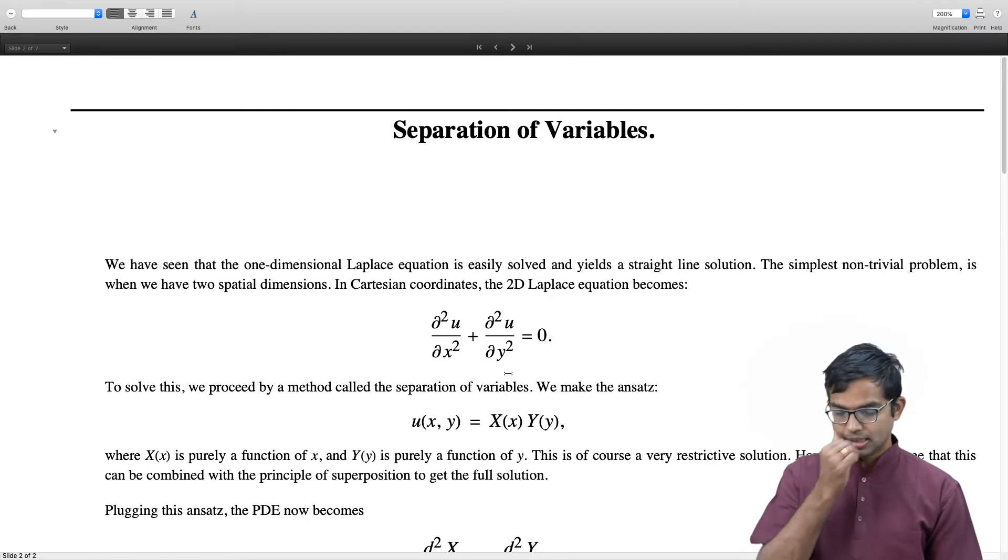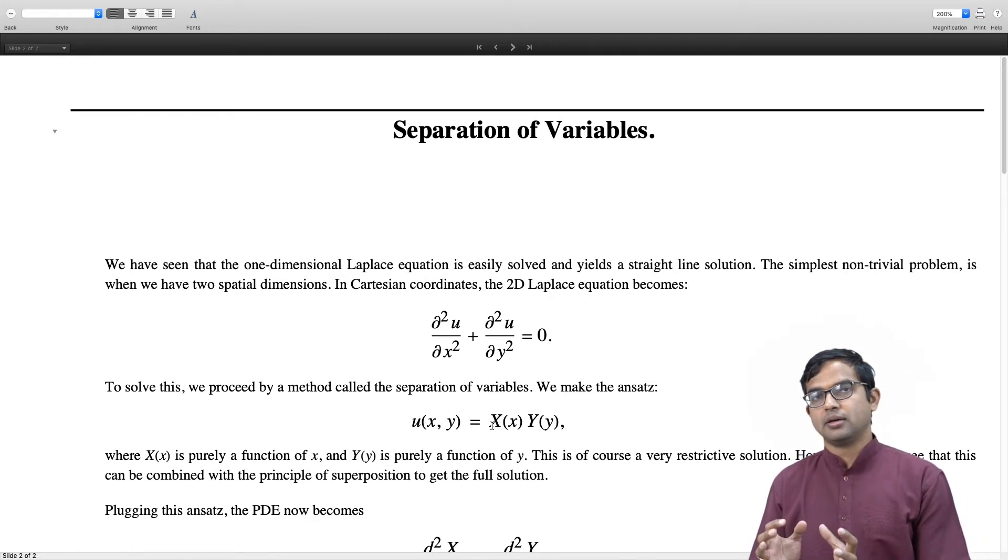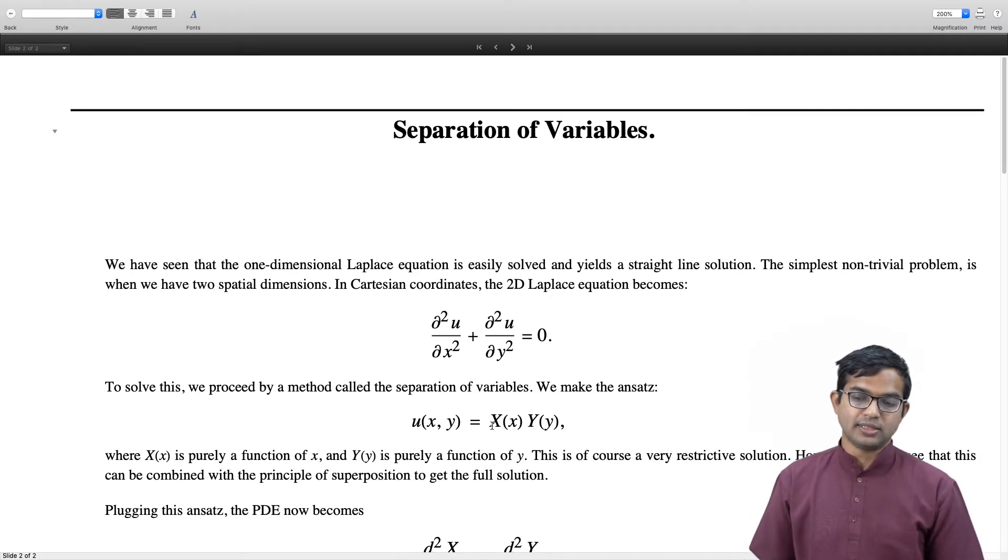The ansatz is to look for a solution where you can write the part which depends on x separately and the part which depends on y separately and take the product: u(x,y) = X(x)Y(y). When doing this, it might appear that we are imposing a very artificial restriction and may only find a very special kind of solution.